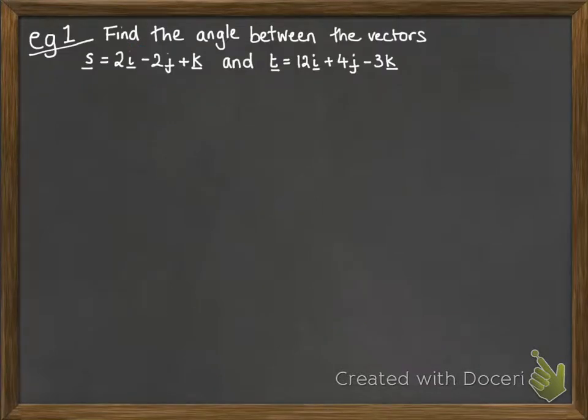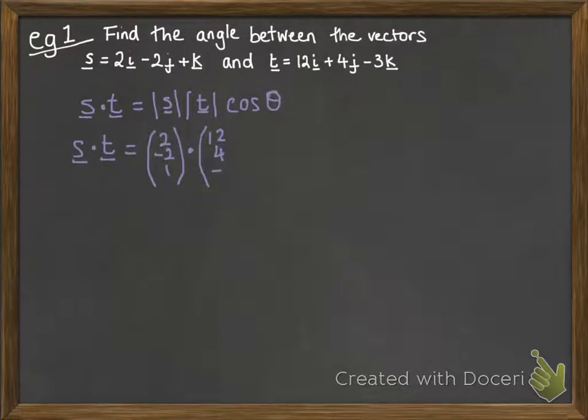Here's our first example of a typical kind of question. So we're going to find the angle between these two vectors. We need a few components to be able to use that little formula we saw on the previous slide. So we need to work out the dot product first of all. And I'm just putting those into column vectors so it's easy to see where the multiplication is happening.